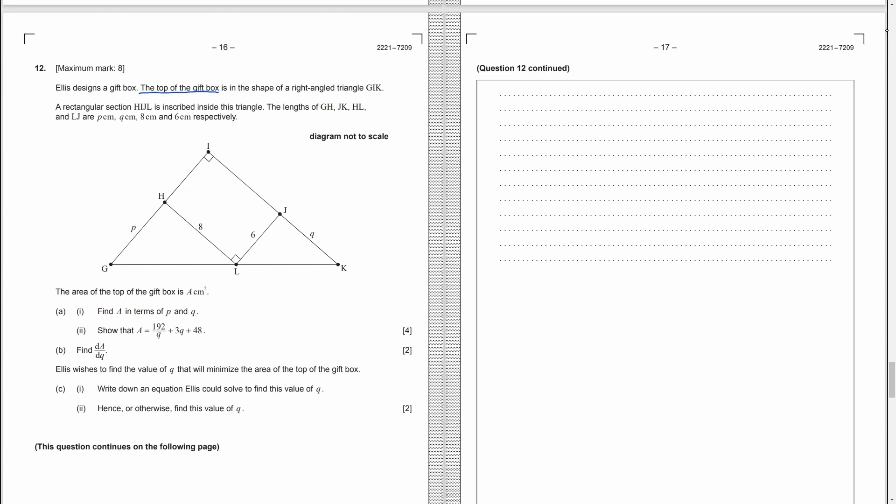Question 12. A gift box is a right angled triangle GIK. A rectangle HIJK is inside the triangle. Some of the lengths are labeled in the diagram. Part A, we need to find the area of the triangle. Triangle area is base times height divided by 2. Height and base should be perpendicular to each other. GI is the height and IK is the base. The area is GI, P plus 6, times IK, 8 plus Q, and then divided by 2.